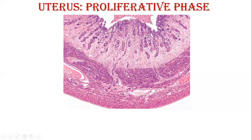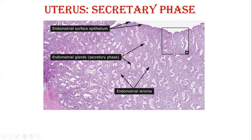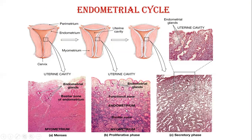To compare: in the proliferative phase slide, glands are straight, functional layer thickness is average, and the phase is regulated by estrogen. In the secretory phase slide, glands are more coiled, functional layer is much thicker with many glands and more edematous tissue — this is under the effect of progesterone. These two slides are usually given for identification and you have to draw accordingly.